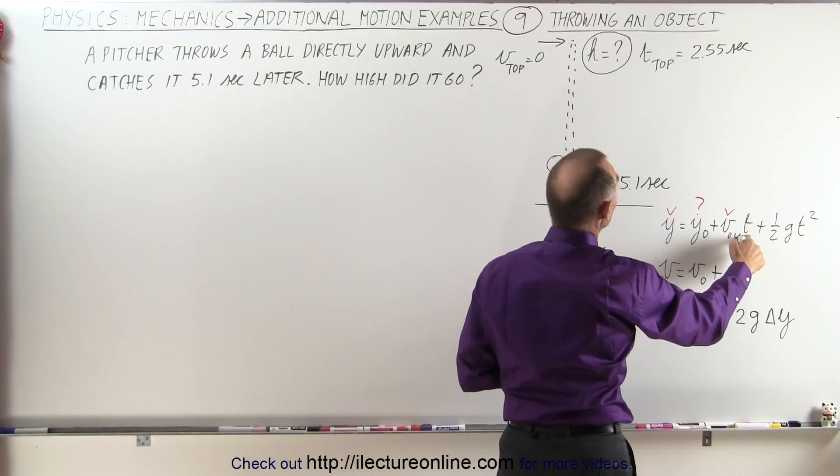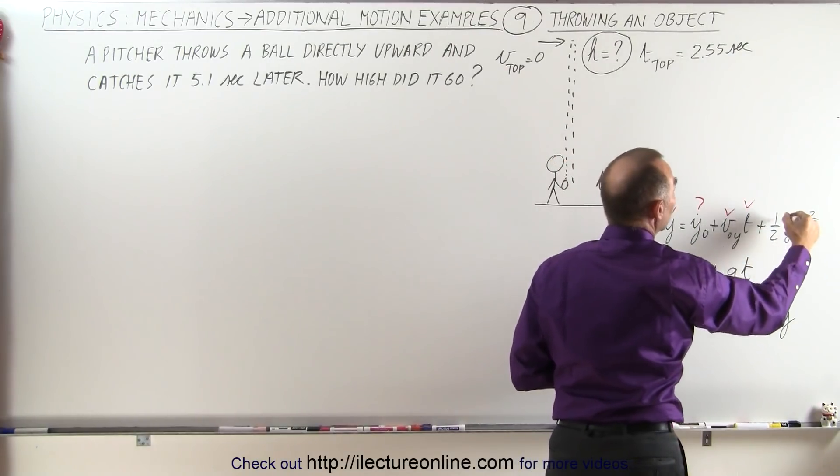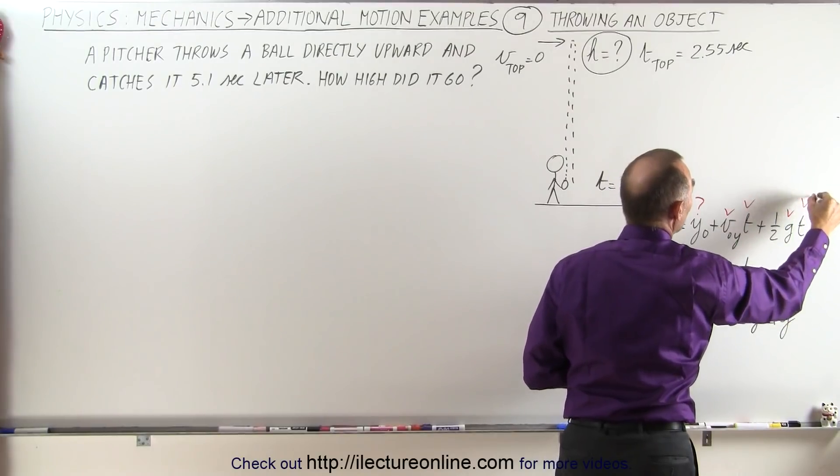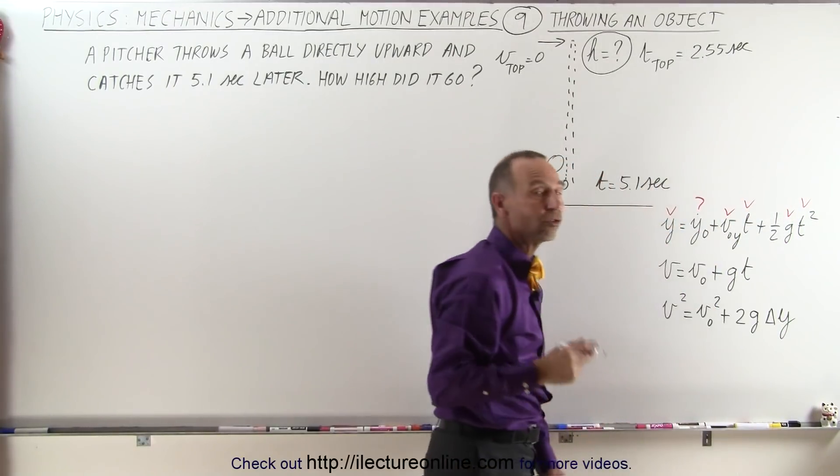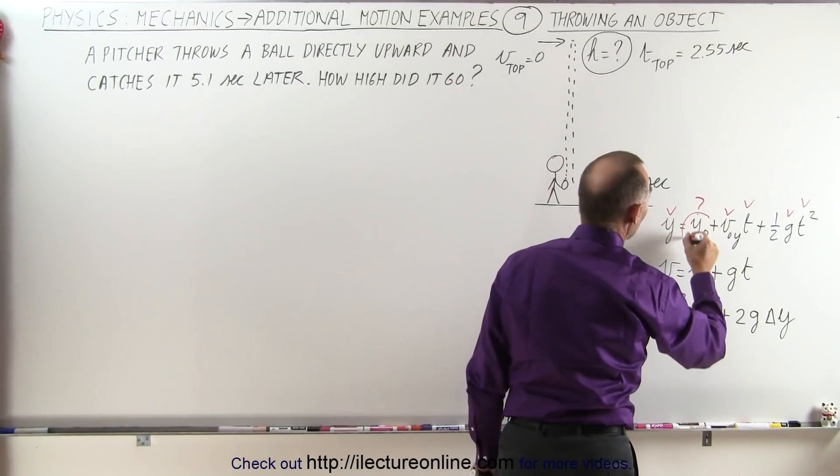The time here, well we know the time would be 2.55 seconds. One half is known, g is known, and time would be known. In other words we could use this equation to solve for the unknown, that would be y sub naught.